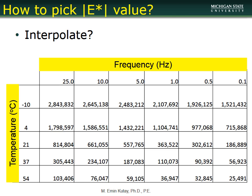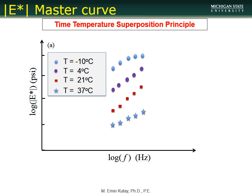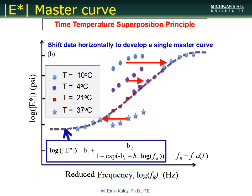When we plot this data with frequency on the horizontal axis and dynamic modulus on the vertical axis, we see separate curves for each temperature — minus 10, 4, 21, and 37 degrees Celsius. If we shift one set of data left or right relative to a reference curve, we can construct a smooth sigmoidal master curve. We can then fit an equation to that smooth curve, making it easier to find E-star at different frequencies.